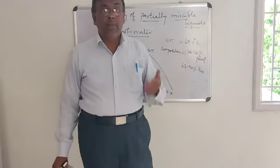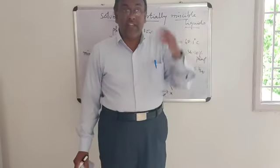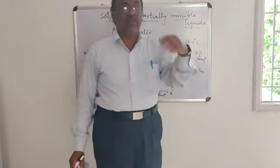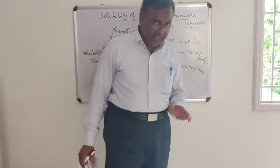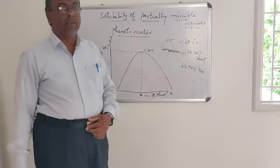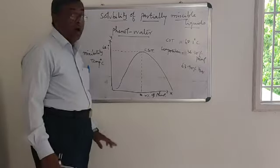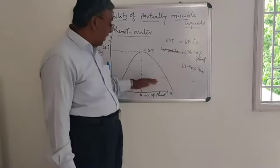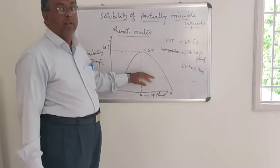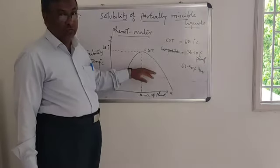There are some liquid pairs in which miscibility increases with decreasing temperature. In such cases, we use LCST — Lower Critical Solution Temperature. That is for different liquid pairs, but it is not given in your syllabus. In your syllabus, only UCST is given, which is observed in the phenol-water system. Below 68.1°C, all compositions of phenol and water are immiscible, heterogeneous, and show turbidity.